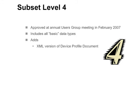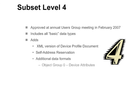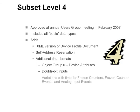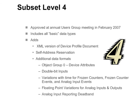Level 4 also adds self-address reservation. With self-address reservation, if a device receives a message with a destination address of hex FFFC and the self-address feature is supported and enabled, it should respond normally with its own source address instead of FFFC. Subset level 4 also adds additional data formats, including object group 0 device attributes, double-bit inputs, variations with time for frozen counters, frozen counter events, and analog input events, floating point variations for analog inputs and outputs, analog input reporting deadband, and event objects for binary and analog outputs.